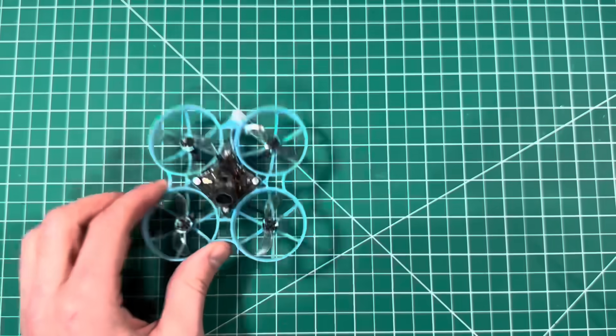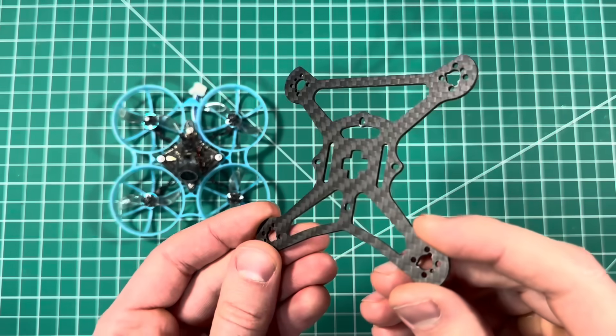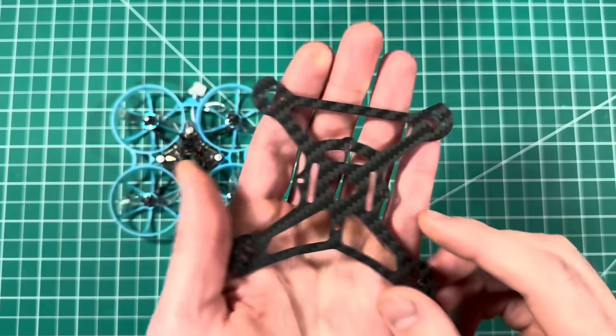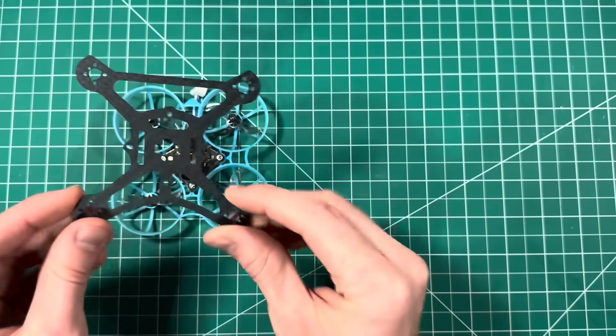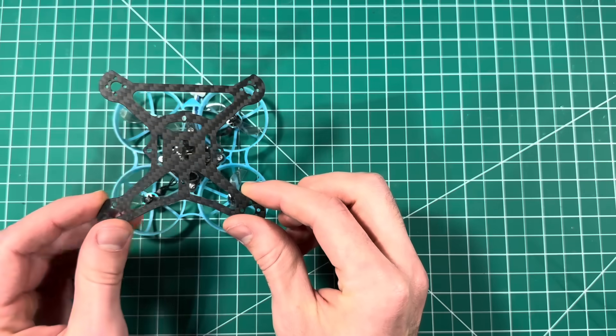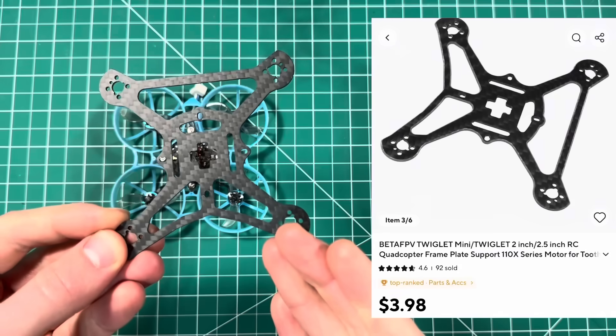Now we're going to take our Tiny Whoop and add a new frame to it. This is the BetaFPV Twiglet two and a half inch frame. It is super lightweight, pretty durable, and it's going to give us a little bit wider stance to help us carry that extra weight. One of the best parts is this guy only costs about $4 off of AliExpress.